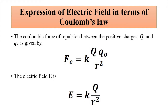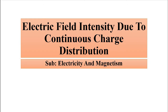In practical situations we have to deal with charge which is distributed over bodies. It can be in one dimension, two dimensions, or three dimensions — along a line in one dimension, over a surface in two dimensions, or over a volume in three dimensions. This video is about the electric field intensity due to a continuous charge distribution over a line, a surface, or a volume.